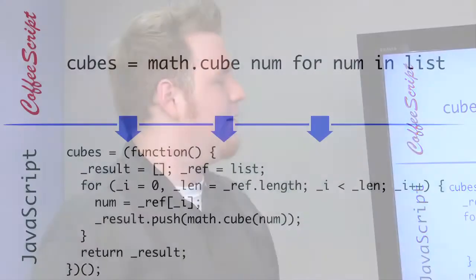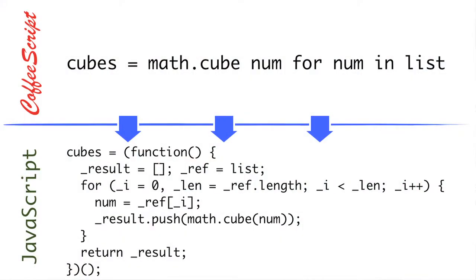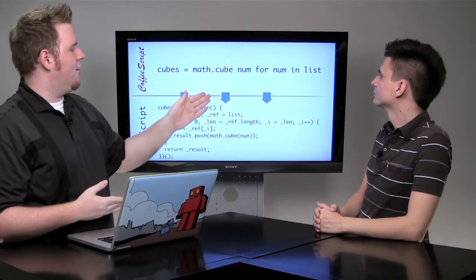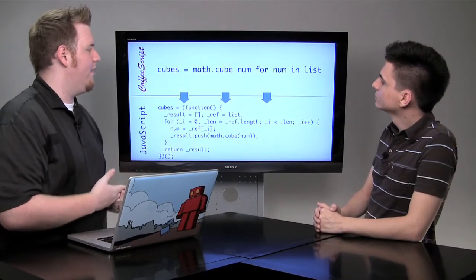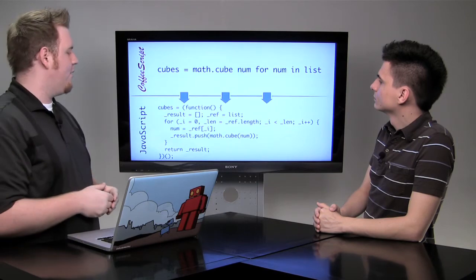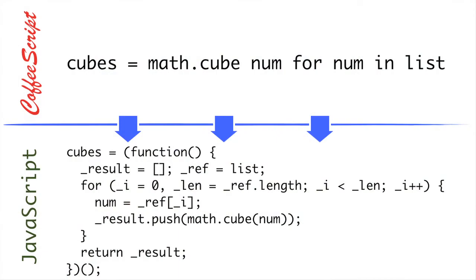So in this expression, we're creating a new list called cubes, and it's going to be based on the original thing called list. We say math.cube for num in list. So what this expands out to is it iterates over every item in list, assigns it to a variable num, and then calls the expression math.cube passing in num for each one.